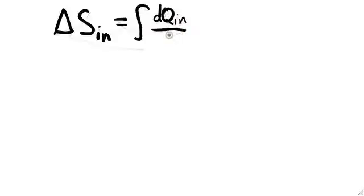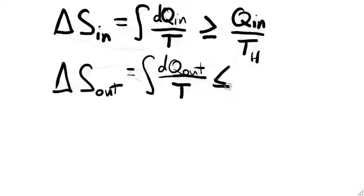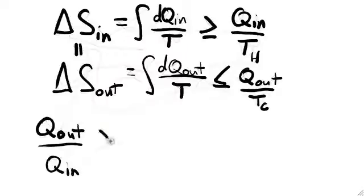As a final demonstration, let's see what we can say for the case of a general reversible heat engine. In general, we would represent delta S in as an integral over those parts of the cycle during which heat flows into the system. Since the temperature of the system is always less than or equal to T h, we can say that this integral is always bigger than or equal to Q in over T h. A similar logic says that delta S out is always less than or equal to Q out divided by T c.